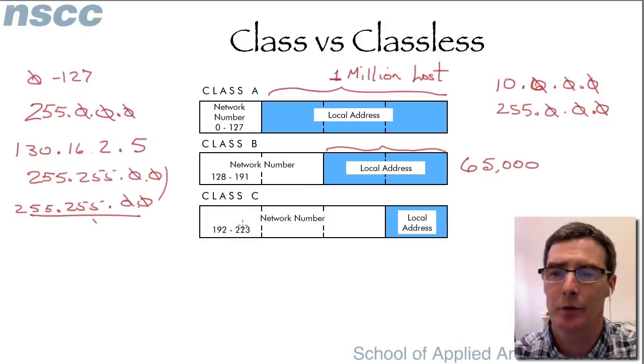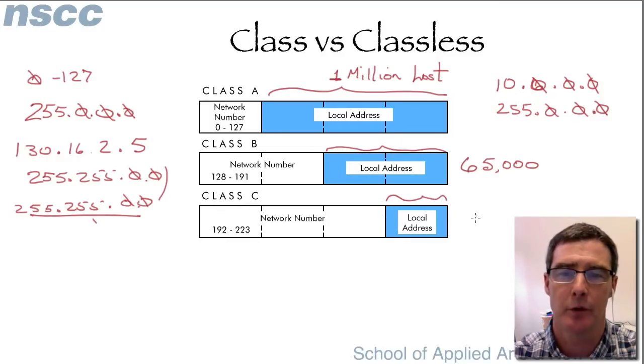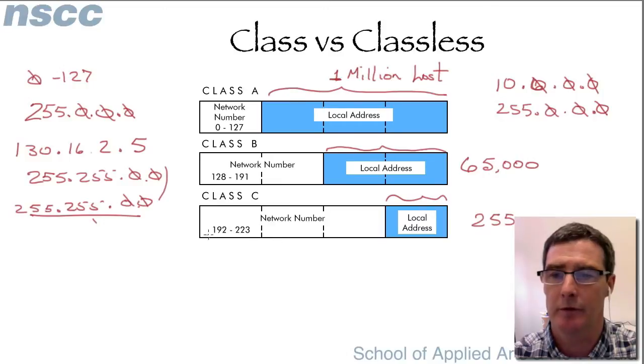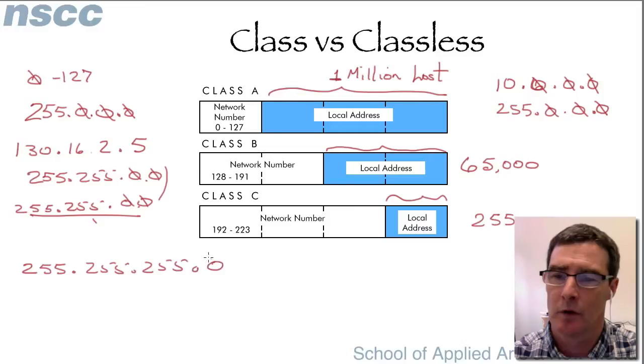Class C was reserved for smaller networks. We have only 8 bits for hosts and so we can have up to 255 host addresses which would give us 253 hosts that we could have. Three octets were used for the network number, so the network mask was three 255s and a zero.